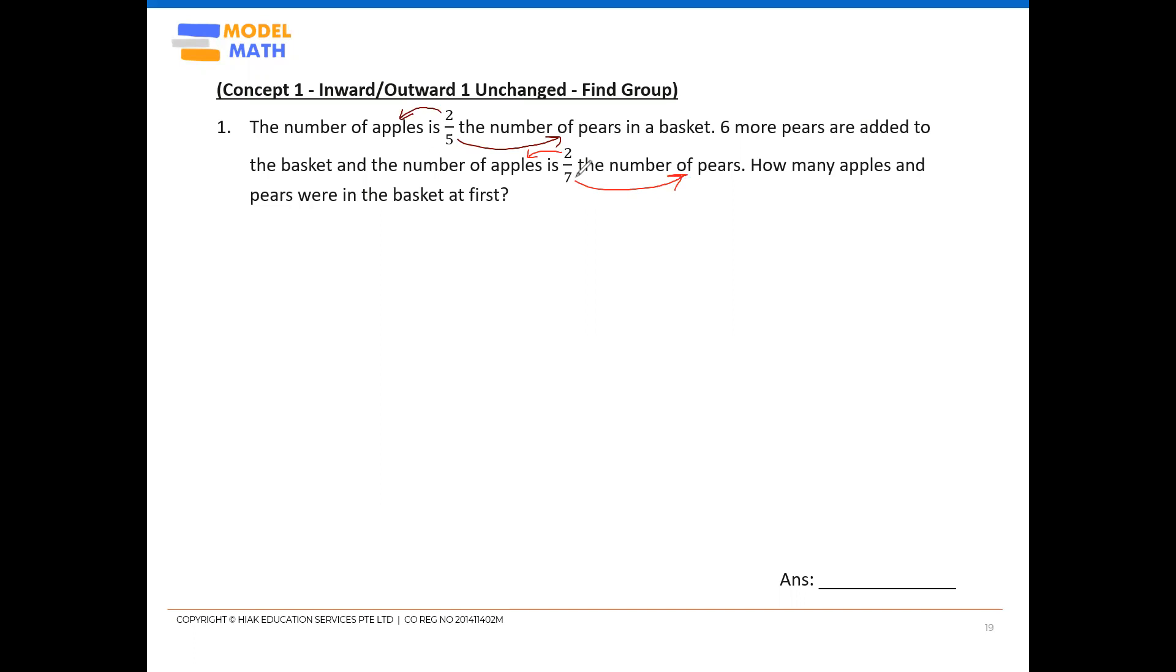If you proceed to make denominators the same, you're telling me that the pears before and after are the same. But is that true? It's not true because there's a change in pears. Six more pears were added to the basket. It does not make sense to make five and seven into 35 units because then you're saying the number of pears should be the same throughout. That is absolutely not true.